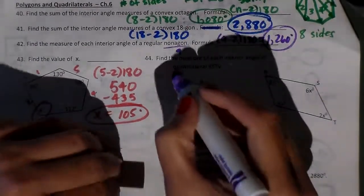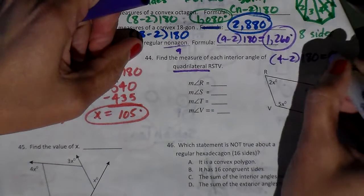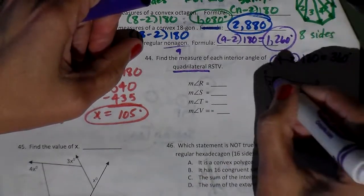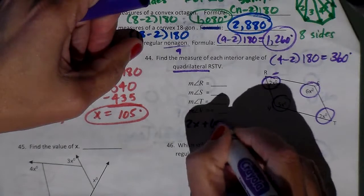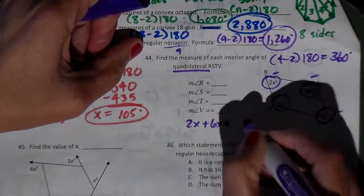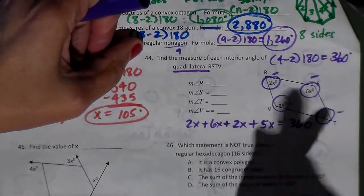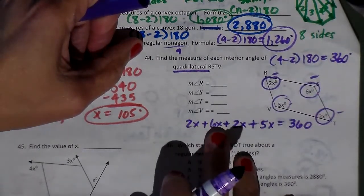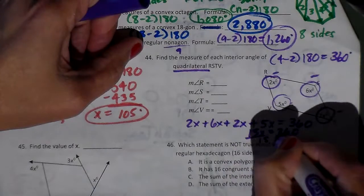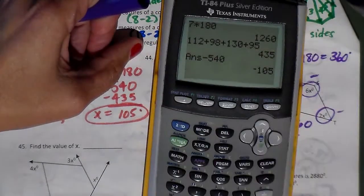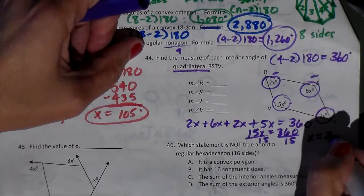Now let's look at the next one. This is a quadrilateral. For a quadrilateral, the interior angle sum is 4 minus 2 times 180, which is 360. So all of these guys have to add up to 360, so I'm just going to set up an equation. 2x plus 6x plus 2x plus 5x should all equal 360. So I have 2 plus 6, which is 8, plus 2 is 10, plus 5 is 15. So 15x equals 360, and I'm going to divide both sides by 15. So x equals 24.